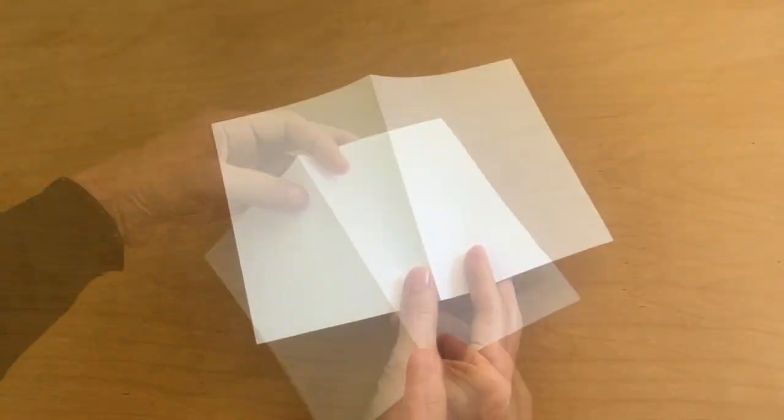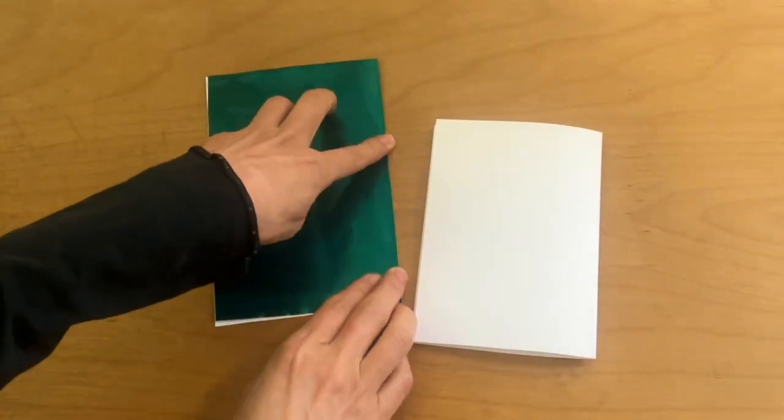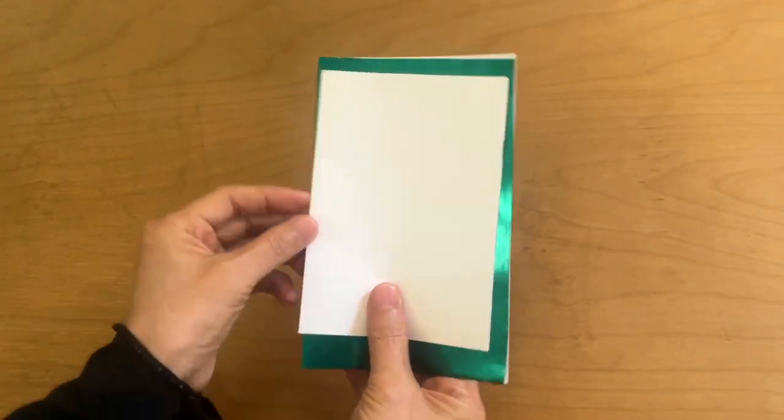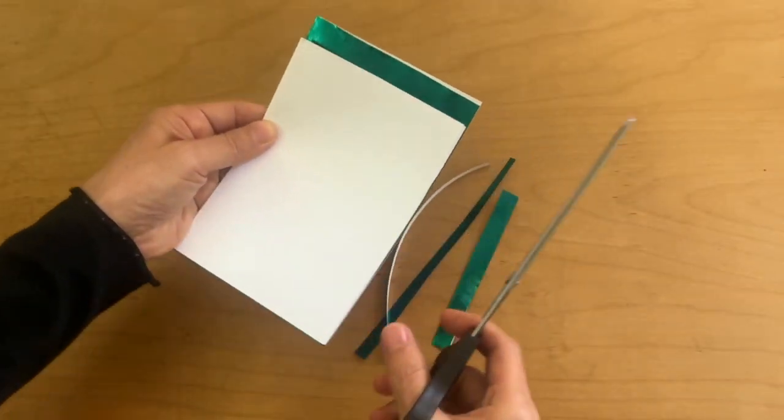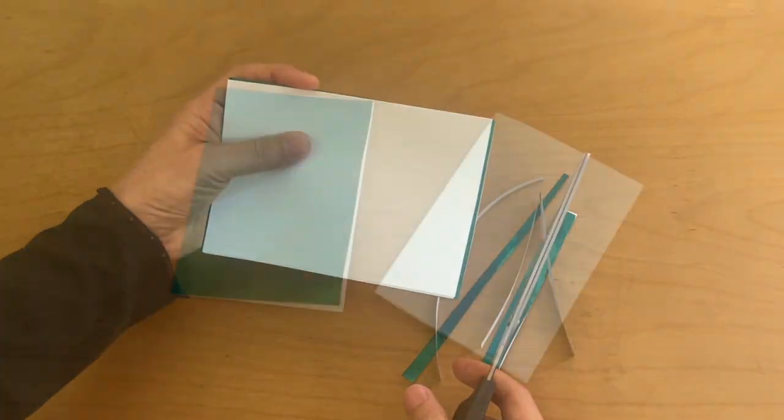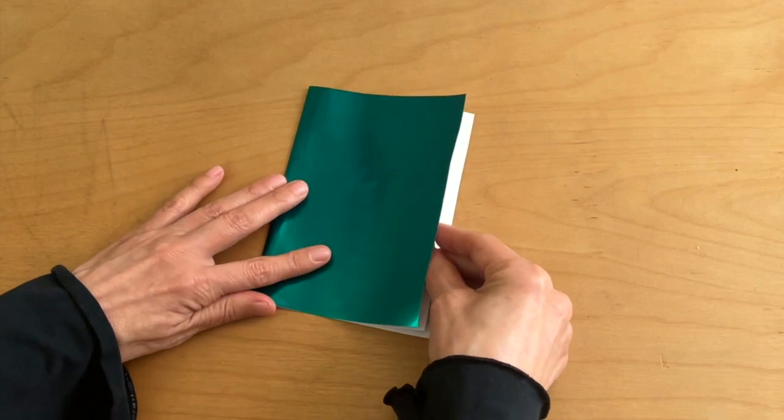Fold it and take a piece of wrapping paper a little larger than that. Fold it in half, align the folded ends together, then cut the three sides of the wrapping paper slightly larger. Open the cover of the wrapping paper and glue the inner paper in the center. Stick them firmly.